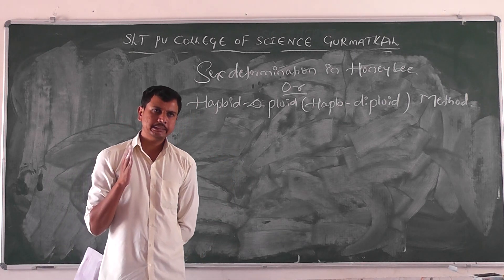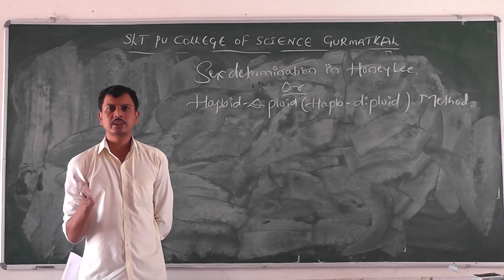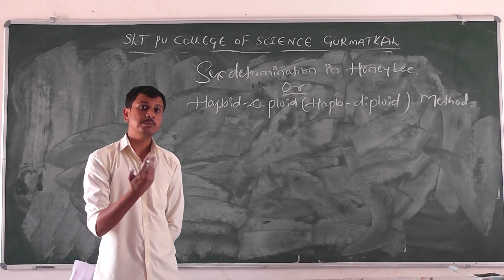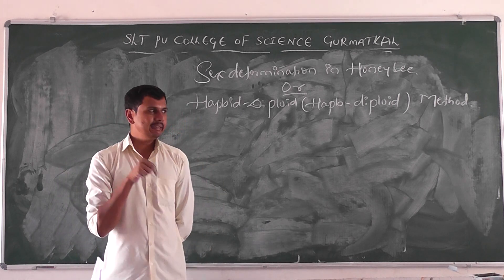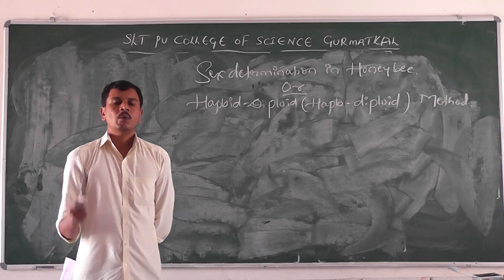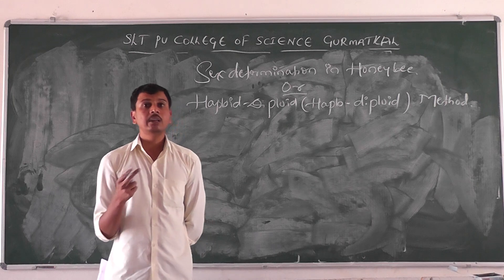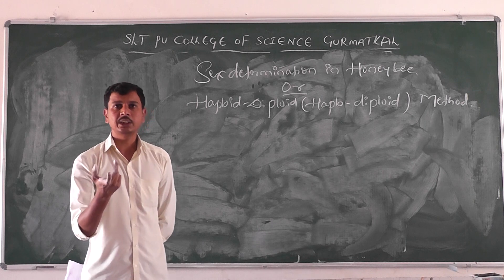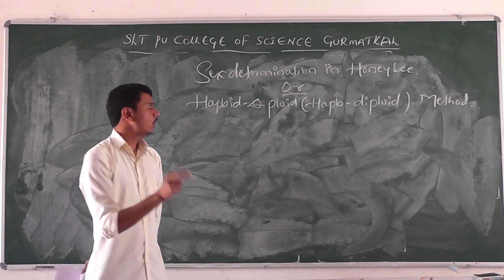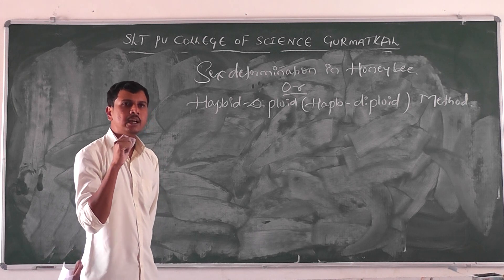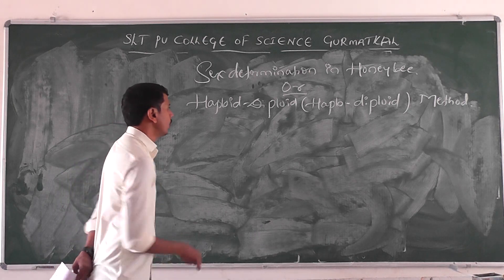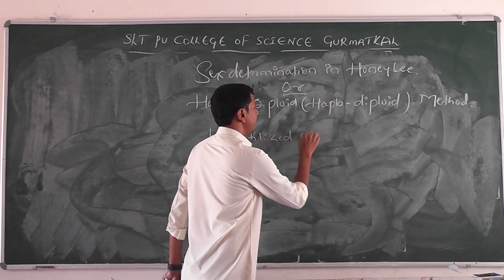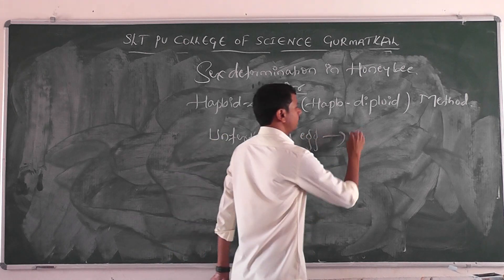Up to now we have seen that offspring formation completely depends upon the chromosomes — which chromosome enters the other gamete. But in the case of the honeybee, what matters is whether the egg has been fertilized or unfertilized — whether fusion of gametes has taken place or not. If an unfertilized egg develops into an offspring, that will be the male.